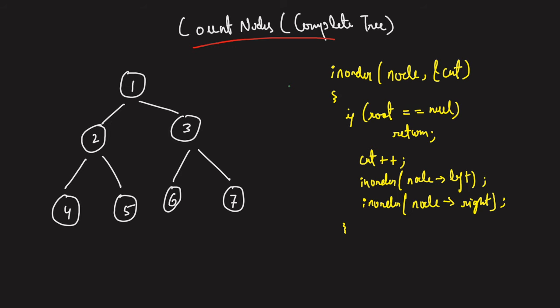So what is the first solution that comes to mind when you hear about counting nodes? That's very simple — we are either going to do an in-order, pre-order, post-order, level order, or any traversal. We can count nodes during that traversal, since traversal means visiting nodes. Whenever you visit a node, just increment a counter. That's going to give us the count of nodes in a complete tree.